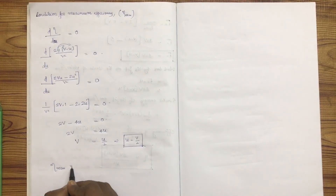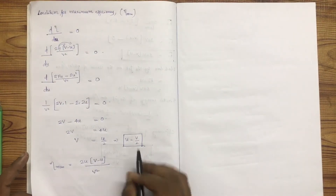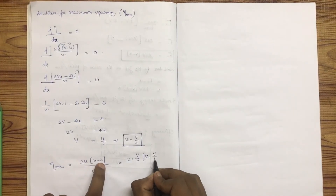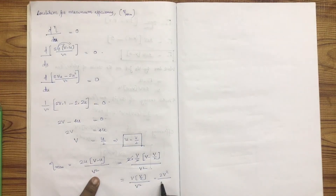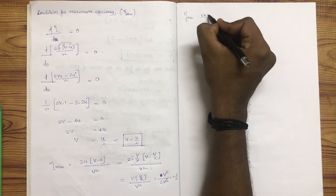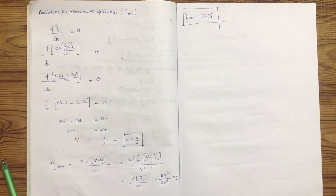Substituting u = v/2 into the efficiency equation η = 2u(v − u) / v²: η = 2(v/2)(v − v/2) / v² = 2(v/2)(v/2) / v² = v²/2 / v² = 1/2. Therefore, the maximum efficiency is 0.5, or 50%.